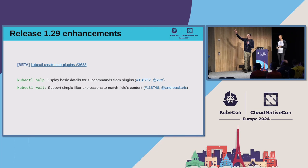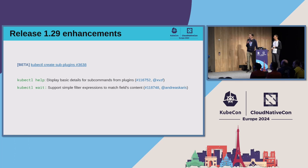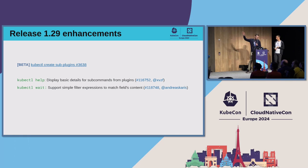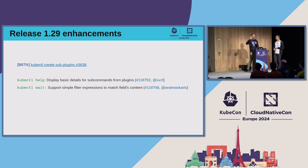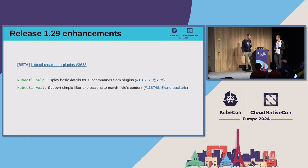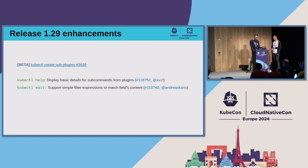We had release 1.29 go out a few months ago. A couple of things we shipped: we had sub-plugins that landed in kubectl for create, so you can actually create sub-commands with your own create specification — for example, kubectl create my-thingy and you can build a plugin for that. We also had some stuff that shipped with help and wait.